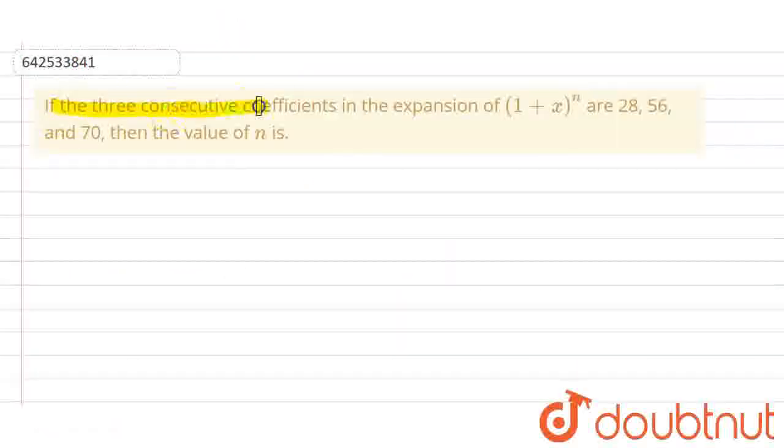Hello everyone, our question is: if the three consecutive coefficients in the expansion of (1+x)^n are 28, 56 and 70, then we have to find the value of n.